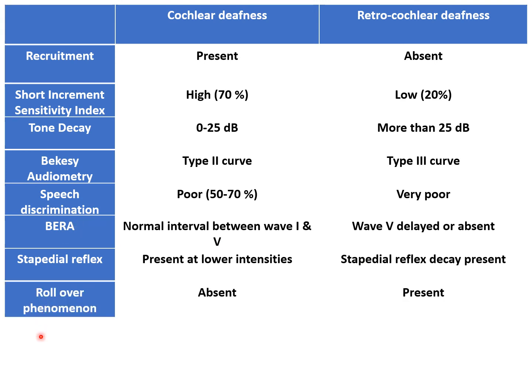In the rollover phenomenon, a graph is plotted between the amplitude and the speech discrimination score percentage. When we increase the intensity of the sound, the patient's speech discrimination score improves. But in rollover, rather than achieving a plateau as in cochlear pathology, the score percentage actually decreases with further increase in amplitude. This rollover phenomenon is a typical feature of retro-cochlear deafness, and can be obtained through speech audiometry.